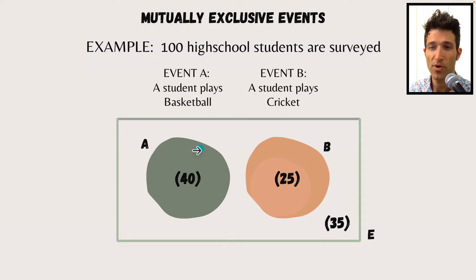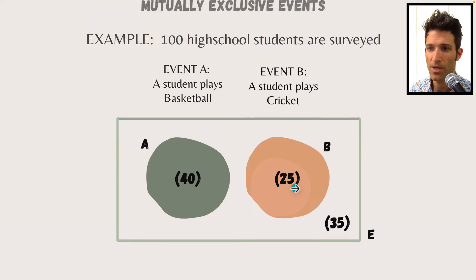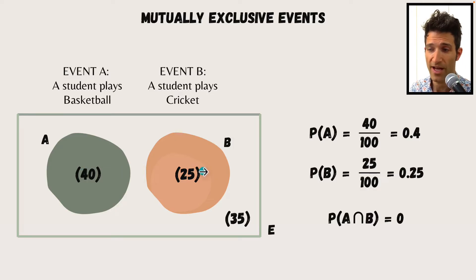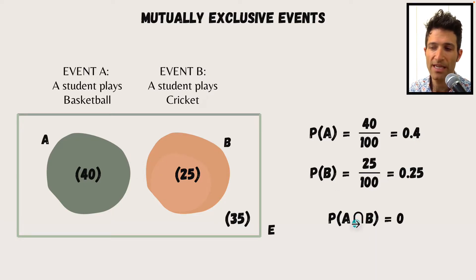Because these are both summer sports, a student can't play both of them at once. You can see that 40 students out of 100 play basketball in this example, 25 play cricket, and 35 play neither of those two sports, summing to 100 students. We can find the probability of each event: 40 out of 100 for basketball, 25 out of 100 for cricket. The important thing to note is that the intersection is actually zero — there is no possibility of playing both sports. This symbol here means the intersection, so the probability of event A and event B happening at the same time is zero.